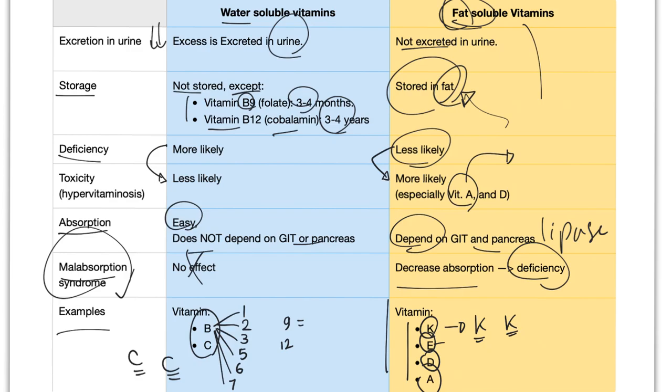Vitamin E is antioxidant. Vitamin D is good for your bone. If you have deficiency of vitamin D, you can get rickets if you're a kid or osteomalacia if you're old. Vitamin A is for your vision, especially your retina.